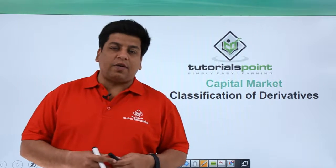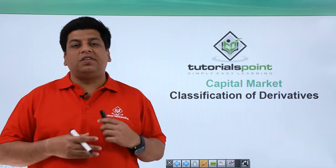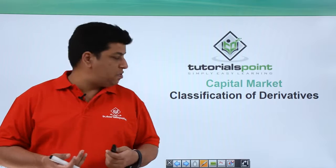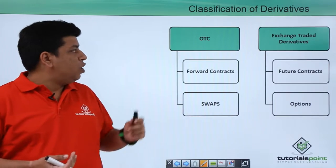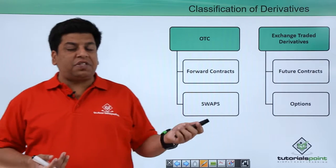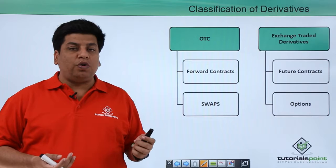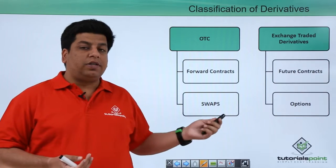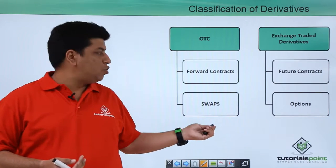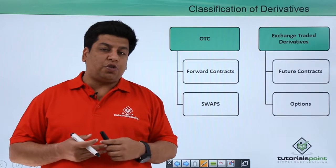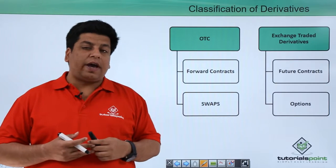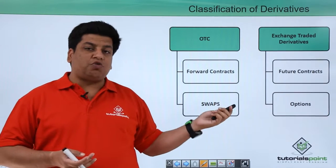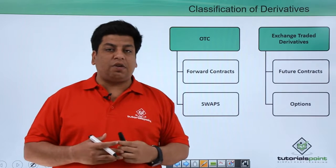Now let's understand the different types or classification of derivatives. Derivatives can be categorized into four: forward contracts, swaps, future contracts, and options.